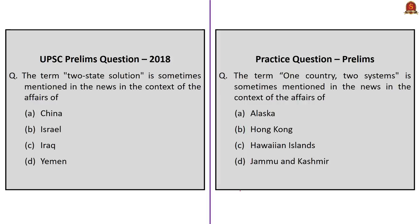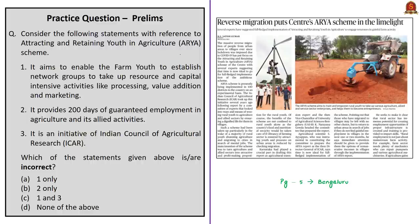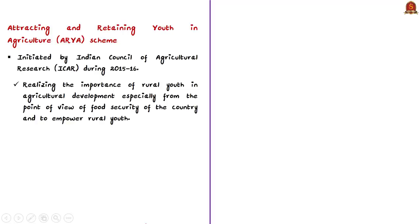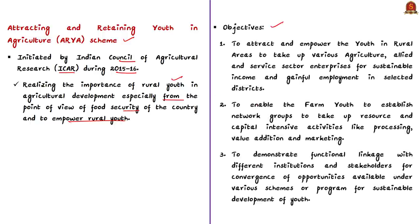Let us move on to the next news article. This article mentions that the massive reverse migration from urban areas to villages happening due to lockdown is one reason to focus on the ARYA scheme of the central government. ARYA stands for Attracting and Retaining Youth in Agriculture. This scheme was initiated by the Indian Council of Agricultural Research (ICAR) during 2015-16, recognizing the importance of rural youth in agricultural development, especially from the point of food security and to empower rural youth.